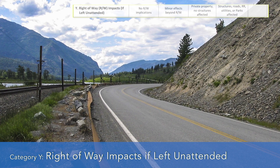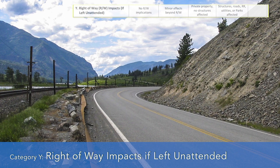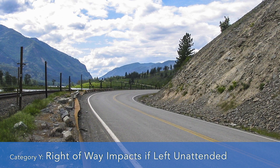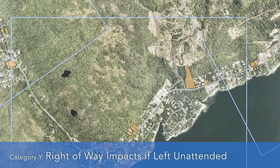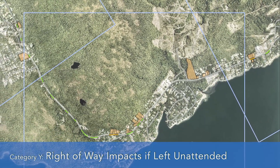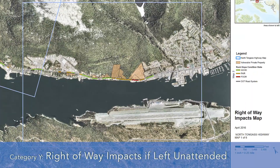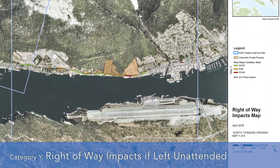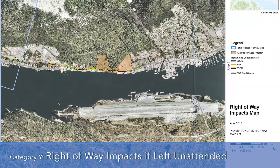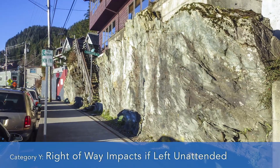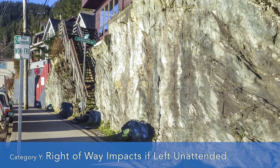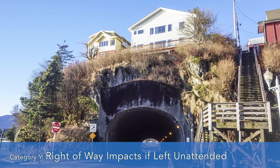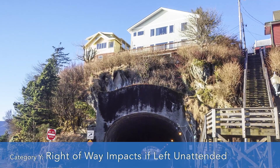The next risk rating category is category Y — right-of-way impacts if the hazard is left unattended. Adjacent landowners may be impacted by unstable slopes retrogressing to property boundaries and beyond. If structures or other transportation systems are potentially impacted by the unstable slopes, then the risk to the agency increases. Maps displaying right-of-way are helpful when performing these evaluations. If there are no adjacent property owners or your agency owns the adjacent right-of-way, you're likely to stay in the three-point category. If other landowners have structures or other infrastructure adjacent to your right-of-way, you can score that up to 81 points.